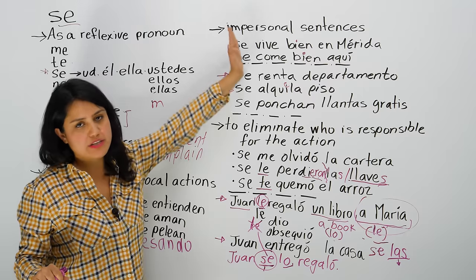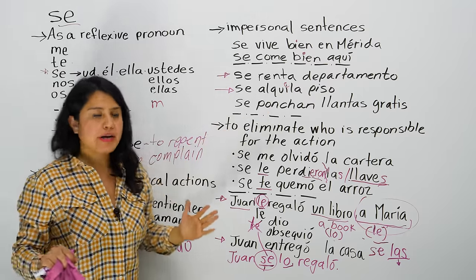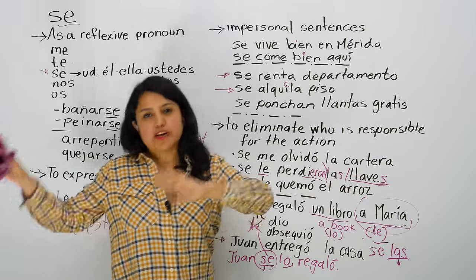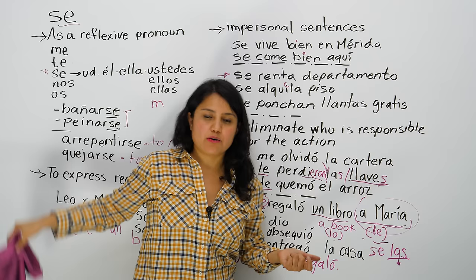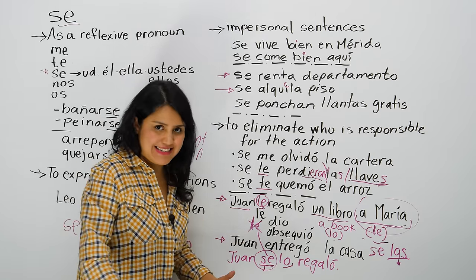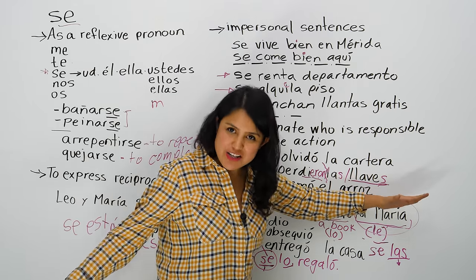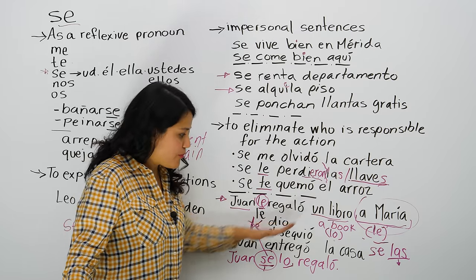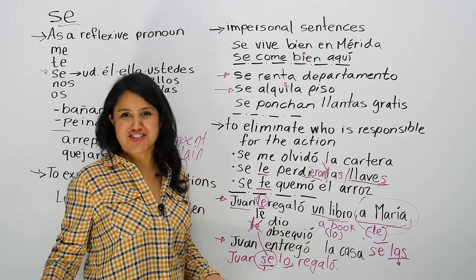This is actually the most complicated use because it involves replacing a lot of particles in the sentence — rearranging a sentence. That's where you see 'se' a lot. When you don't want to write the long sentence and the context is understood, you replace indirect and direct objects: 'le' becomes 'se' before lo, los, or las. So, Juan se lo regaló. You can write the long sentence, but if you know the context, make it shorter.